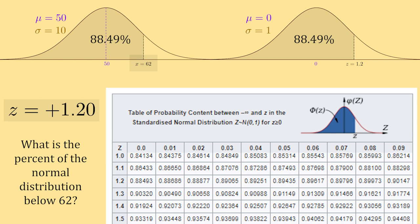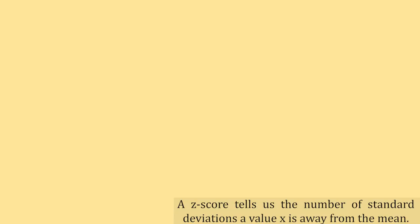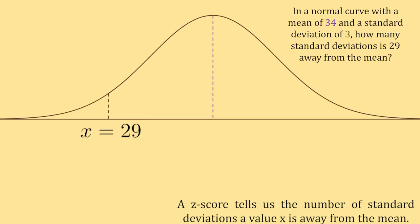Another thing that z-scores tell us is the number of standard deviations a point is from its mean when it's plugged into the z-score formula. For example, say I was asked how many standard deviations away from the mean is 29 in a normal curve with a mean of 34 and a standard deviation of 3.